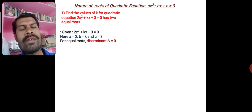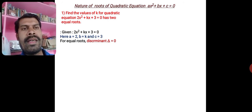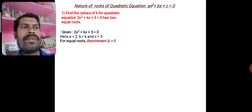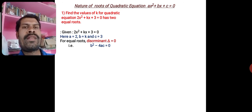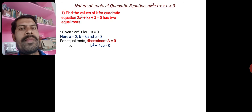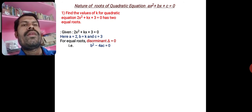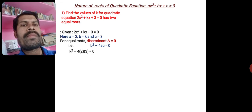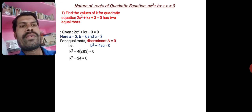What is the condition for equal roots of a quadratic equation? The discriminant should be 0 — that means delta = 0, i.e. b² − 4ac = 0. So therefore k² − 4 × 2 × 3 = 0, that is k² − 24 = 0.